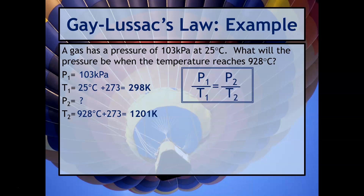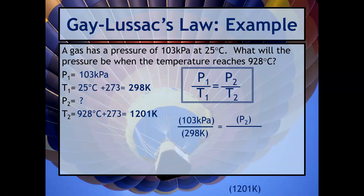Now we use P1 over T1 equals P2 over T2 and plug in all the numbers. This is another example where you can cross multiply — for example, 103 kPa times 1201 Kelvin, then set that equal to 298 times P2 and do the division. Or you could do 103 kPa divided by 298 K, then multiply by 1201 K. Either way, you should get P2 equals 420 kPa.